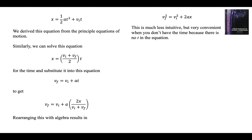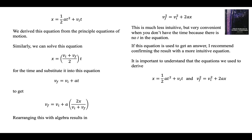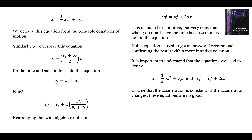Instead of doing two equations with two unknowns, you can do one equation and one unknown. But there's no new physics in this equation. If you use it to get an answer, I recommend confirming it with a more intuitive equation. The equations used to derive these two assume the acceleration is constant. V_initial plus V_final over 2 equals V_average, and V_final equals V_initial plus AT — both assume constant acceleration. If the acceleration is not constant, you cannot use these equations.